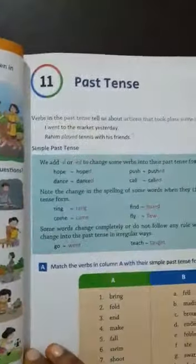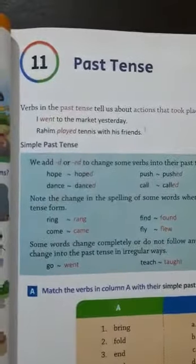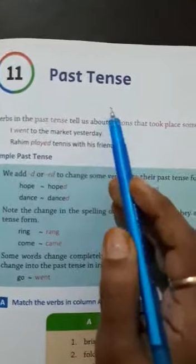Good morning children. Open English 2nd book. Lesson number 11, lesson name is Past Tense.